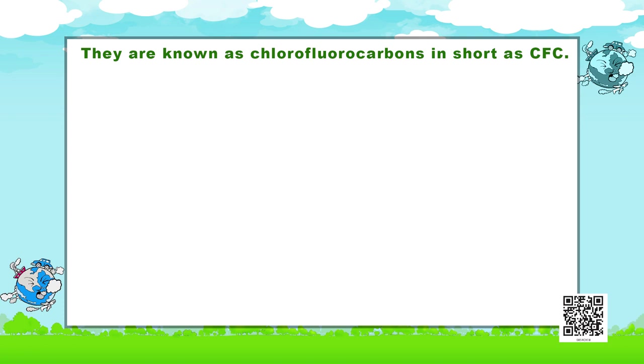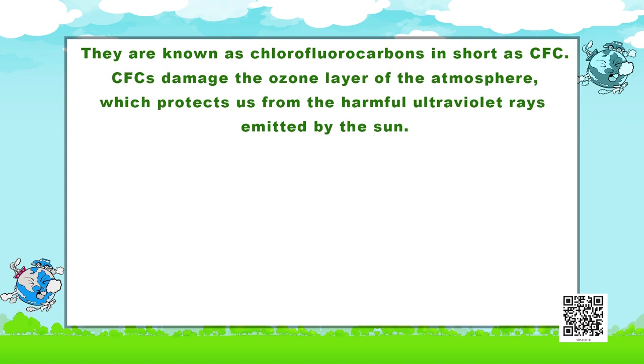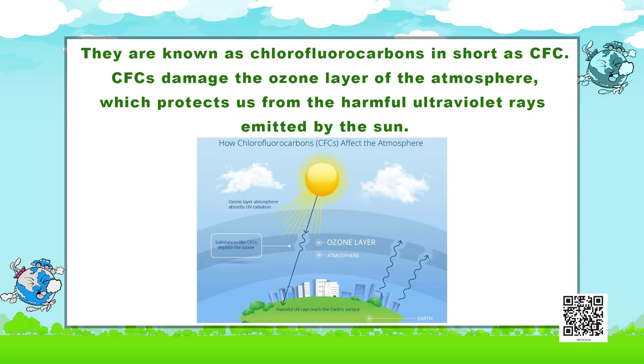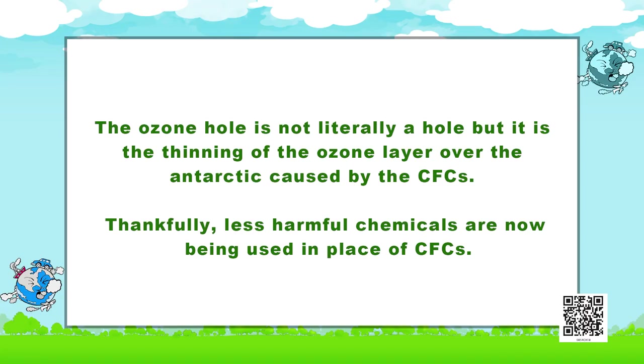There are other kinds of pollutants too. These pollutants are used as chemicals in our refrigerators, air conditioners and in aerosol sprays. They are known as chlorofluorocarbons, or CFCs in short. CFCs damage the ozone layer of the atmosphere, which protects us from the harmful ultraviolet rays emitted by the sun. The ozone hole is not literally a hole, but it is the thinning of the ozone layer over the Antarctic caused by chlorofluorocarbons. Thankfully, less harmful chemicals are now being used in place of CFCs.